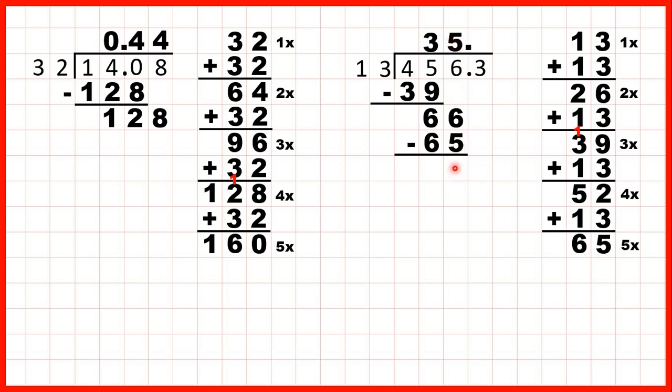Now again, we need to subtract and bring down. 66 minus 65 is 1, and we can bring down the 3, so we have 13 divided by 13, which is of course 1. So that gives us 35.1 as our answer.